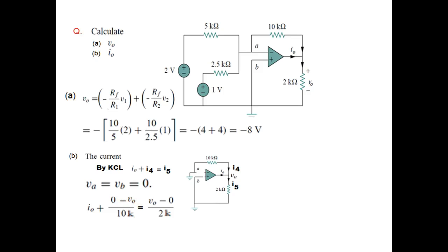0 minus V0 over 10K equals I5, which is V0 minus 0 divided by 2K. Now putting the value of V0 which is negative 8 volts in this equation, our current equation becomes like this. Taking this on the right hand side and solving, we can find I0.